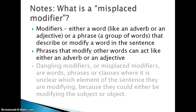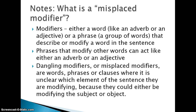Dangling modifiers, or sometimes they're called misplaced modifiers, are words, phrases, or clauses where it is unclear which element of the sentence they are modifying, because they could be either modifying the subject or the object. Or in the case of a dangling modifier, the word they're modifying or describing isn't there at all.